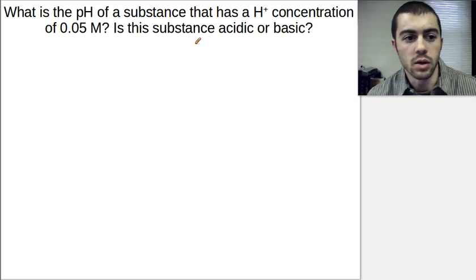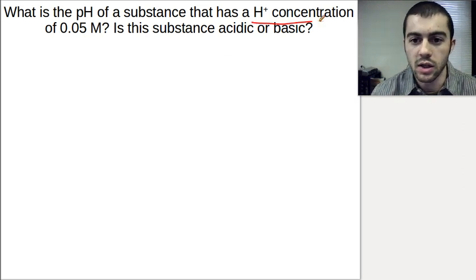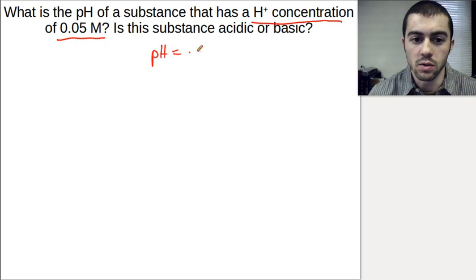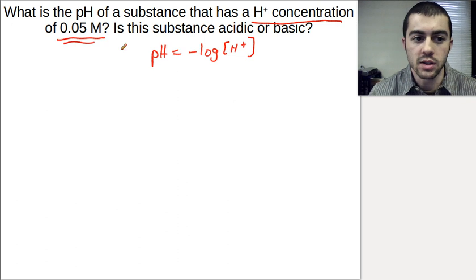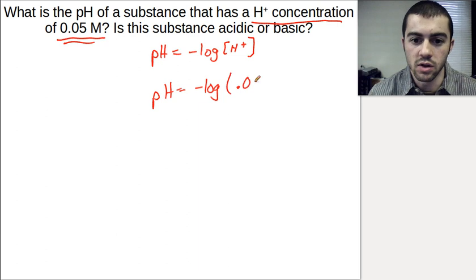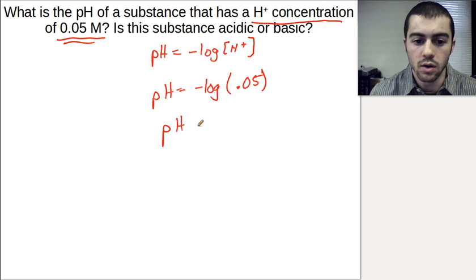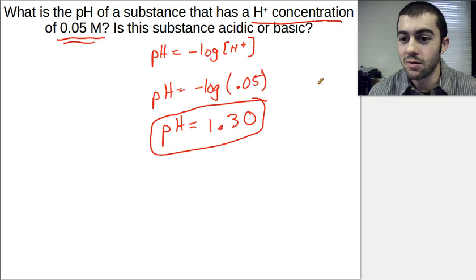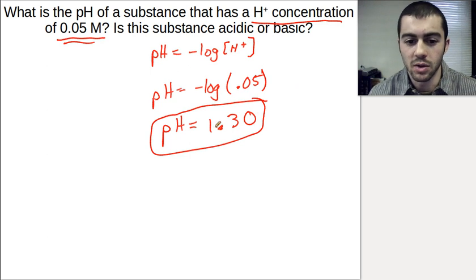Example 1: What is the pH of a substance with an H⁺ concentration of 0.05 M? Using pH = −log[H⁺], we get pH = −log(0.05). Plugging this into a calculator gives a pH of 1.30. Since 1.30 is below 7, this substance is acidic. If you know the formula, calculating pH is very straightforward — just plug in the H⁺ concentration.